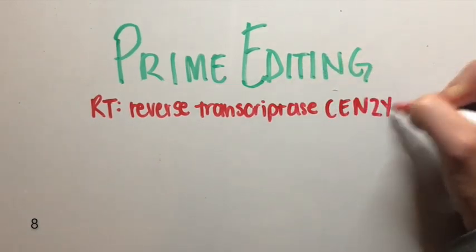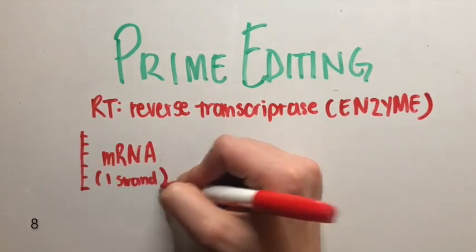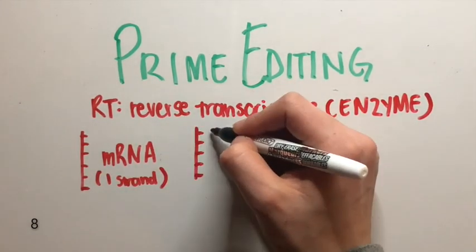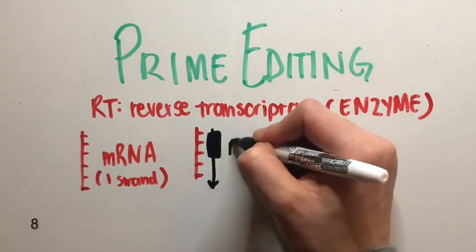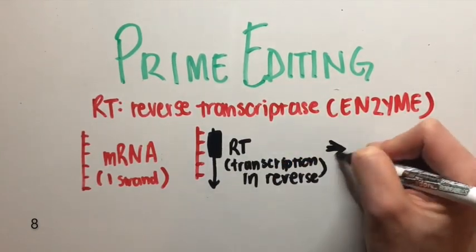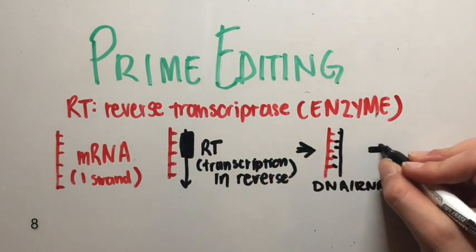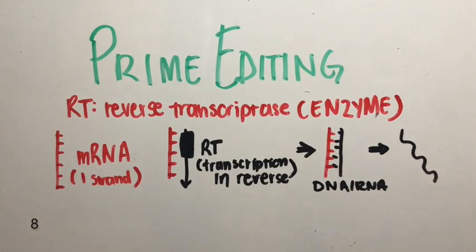Reverse transcriptase is an enzyme that is used to make complementary DNA strands from an RNA template, which is a single strand of DNA. The formation of this DNA duplex is part of reverse transcription, a process that viral particles go through when they enter their target cell. Once again, part of an infectious mechanism is being manipulated by scientists for use in prime editing.